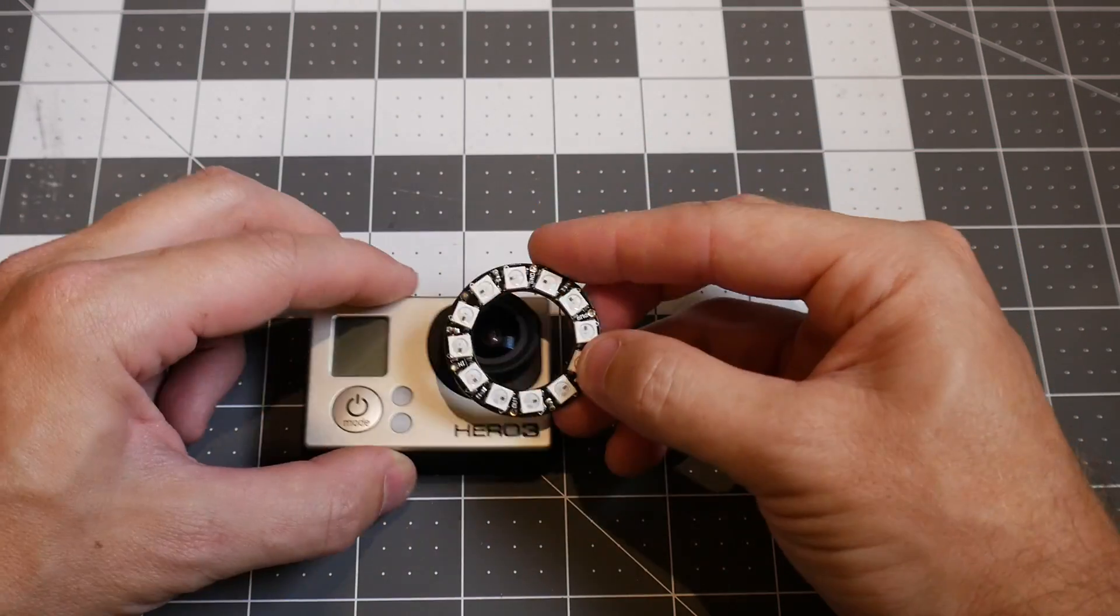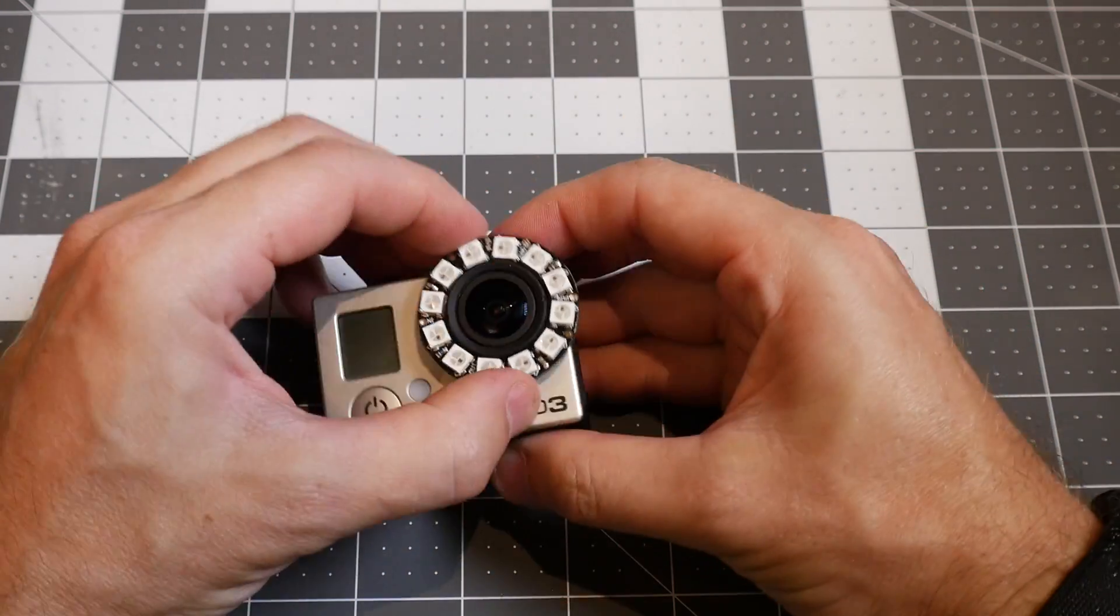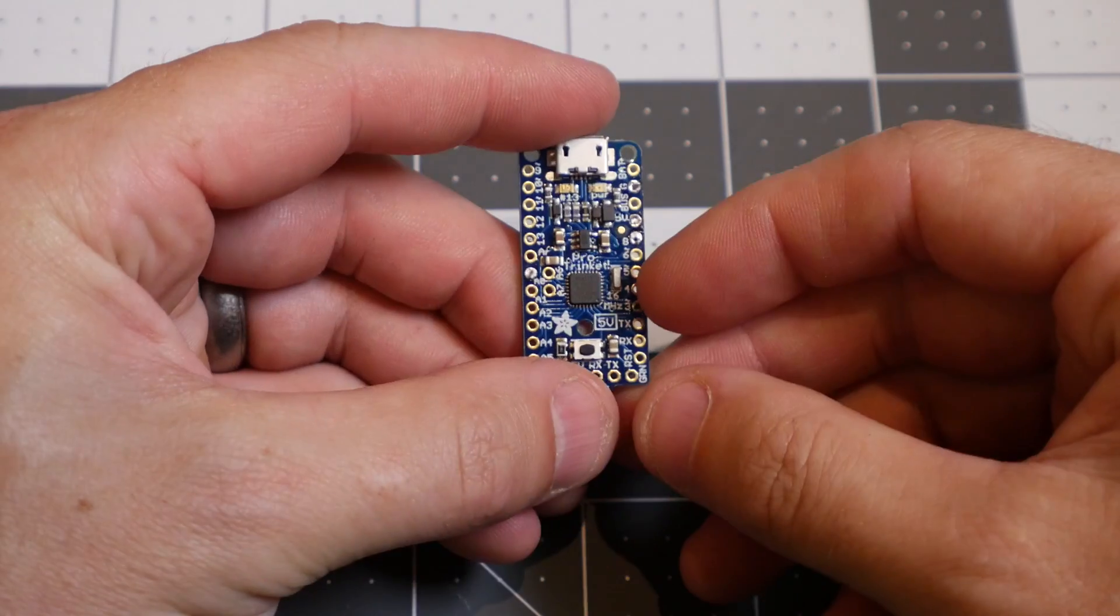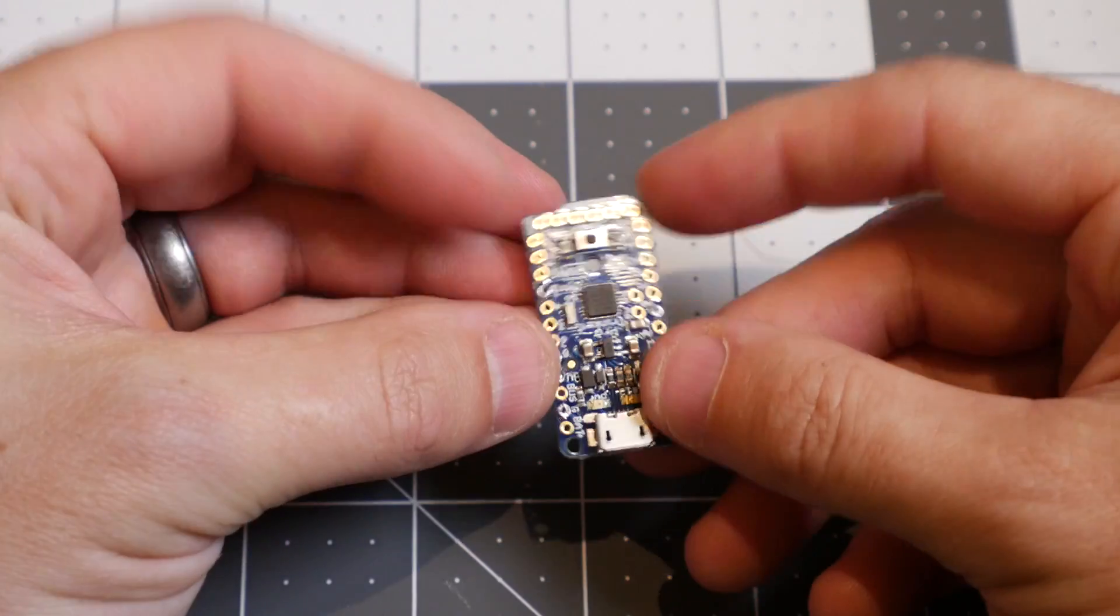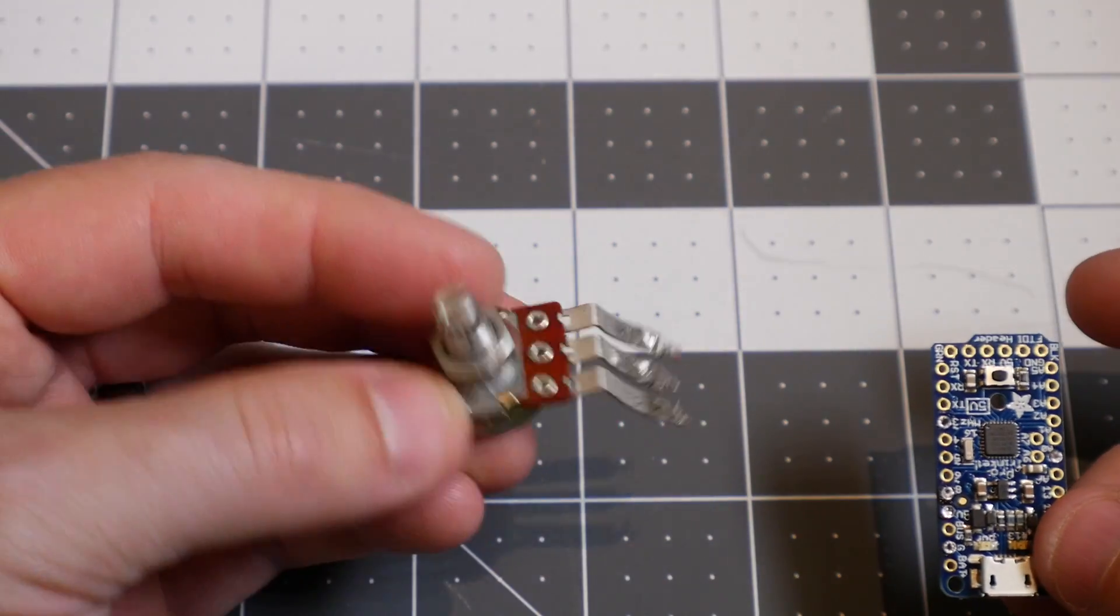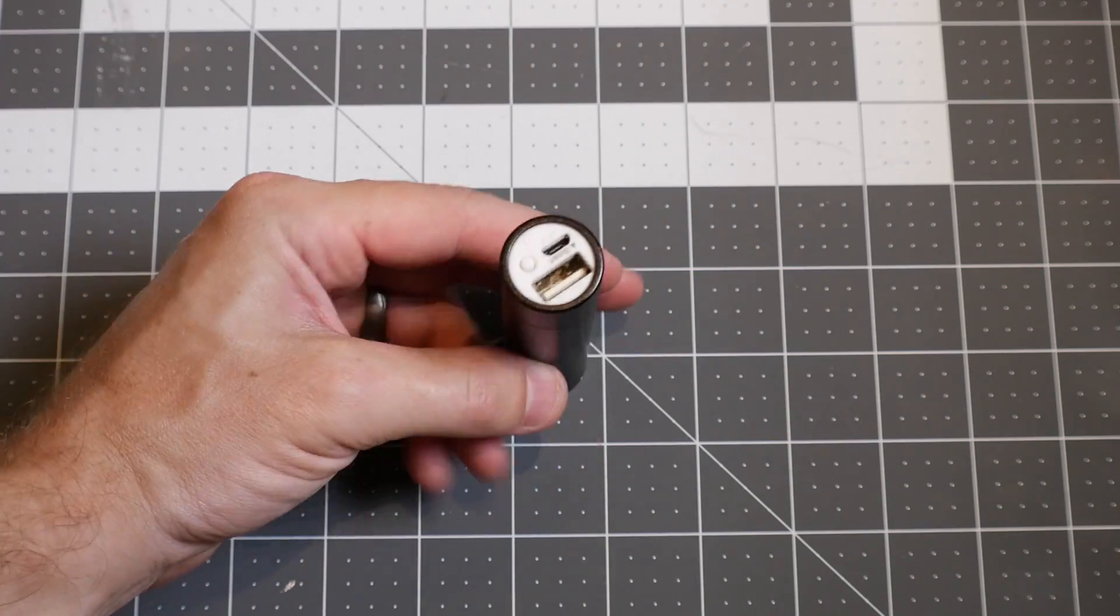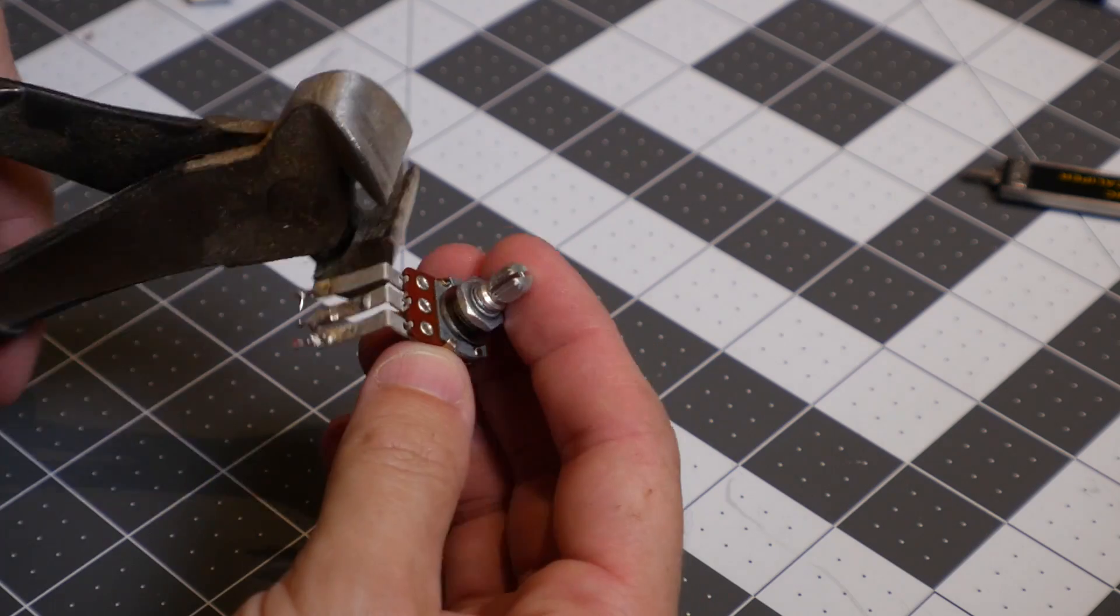I had this NeoPixel ring from Adafruit and I realized that it fit perfectly around the lens of a GoPro. I'm going to drive this with an Arduino compatible Pro Trinket, also from Adafruit. Use a potentiometer just to select the brightness. It's going to be powered by a cheap battery cell that I got from Amazon.